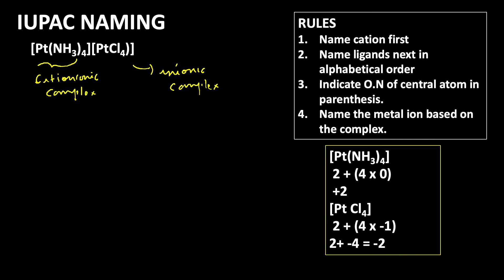So this cationic complex carries plus 2 charge, and the anionic complex carries minus 2 charge. We can write the ligand first, as per the rules. There are 4 NH₃ groups there, so tetraammine. After that, platinum. Next we write the oxidation number in parentheses: 2.